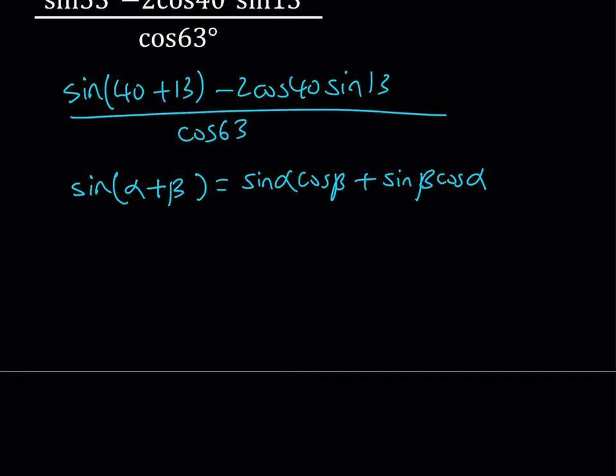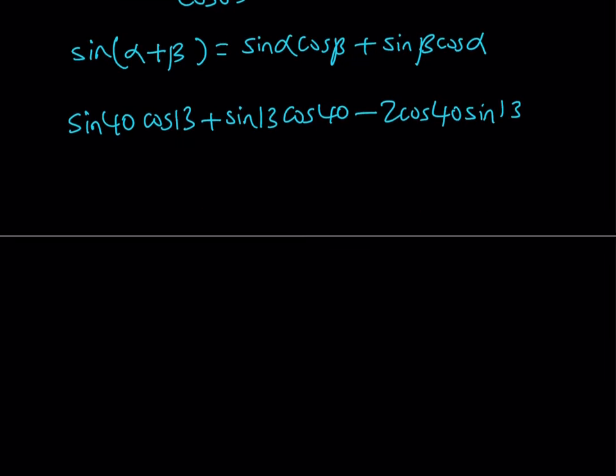If you apply the formula we get sine of 40 degrees multiplied by cosine 13 degrees plus sine of 13 degrees multiplied by cosine of 40 degrees. And then from that we're going to subtract 2 times cosine 40 degrees multiplied by sine 13 degrees. And that is going to be divided by cosine of 63 degrees.